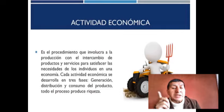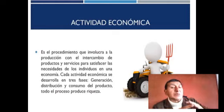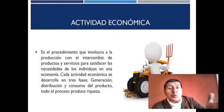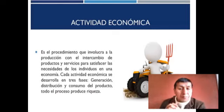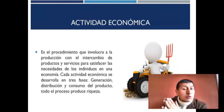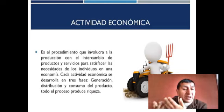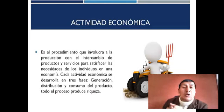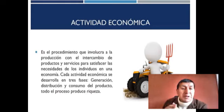Todo el proceso produce riqueza. Entonces, una actividad económica requiere primero producción, luego distribución, y después consumo. Por ejemplo, la papa: se produce en el campo, para su distribución tiene que haber transporte, y para su venta tiene que haber mercados. Los clientes van al mercado y compran el producto final. Eso es actividad económica, más simple no hay.